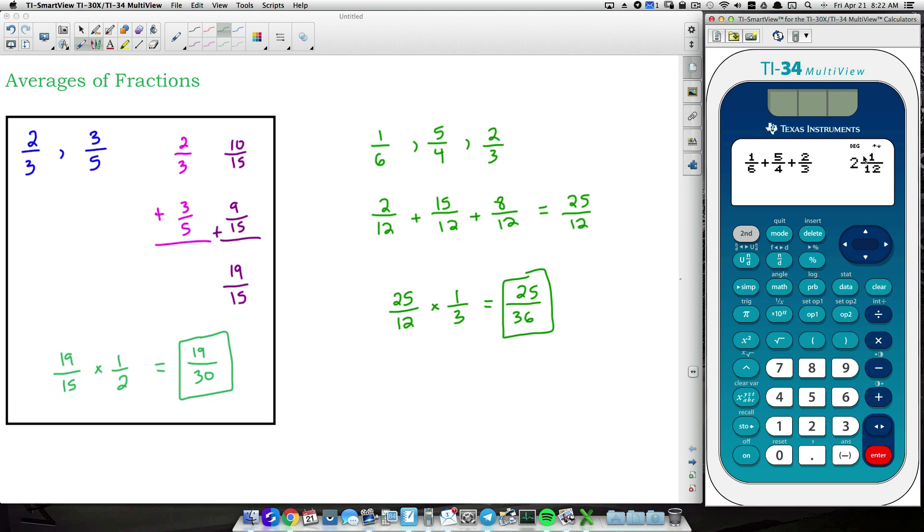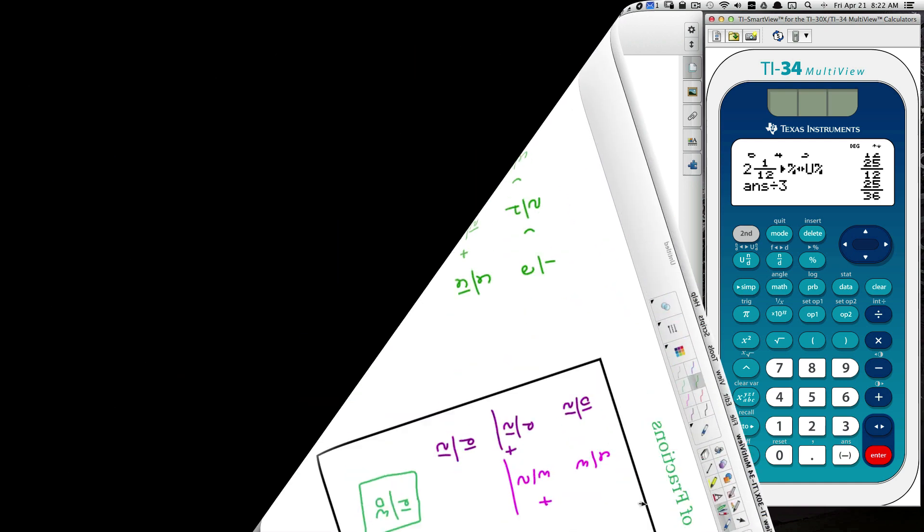And the sum of these, okay, so 2 and a 12, that's going to be 25 over 12. If we convert that to an improper fraction, we do have 25 over 12. So that's our sum. And now we're adding up three fractions. So to find the average of three fractions, we divide by 3. And notice we have 25 over 36, which matches our example there.